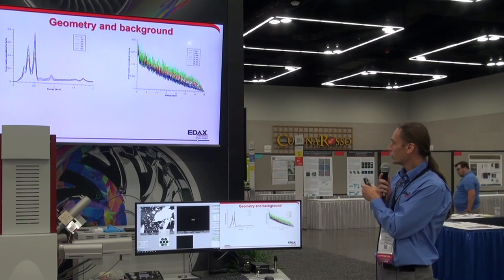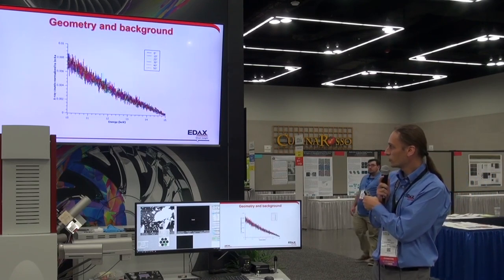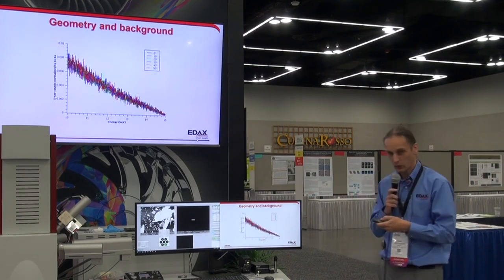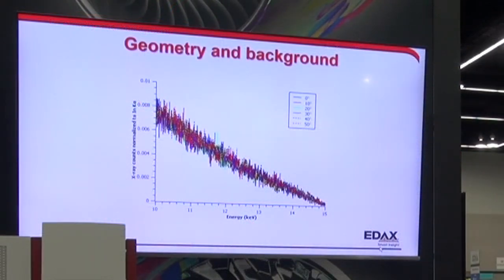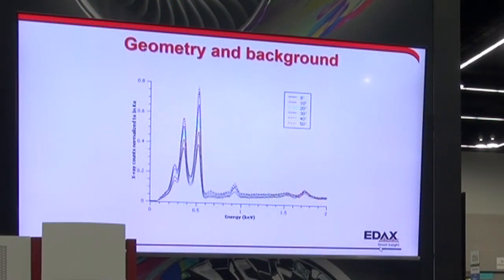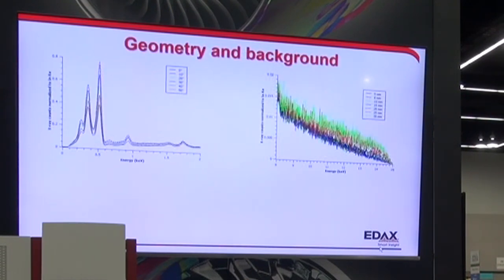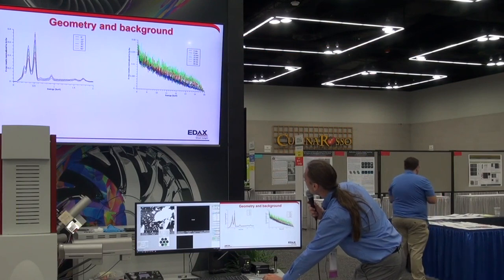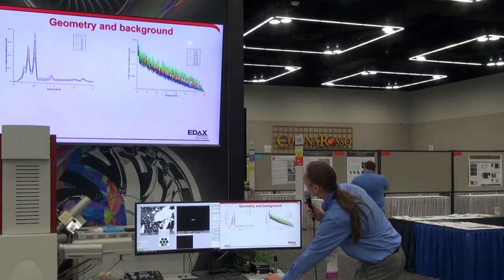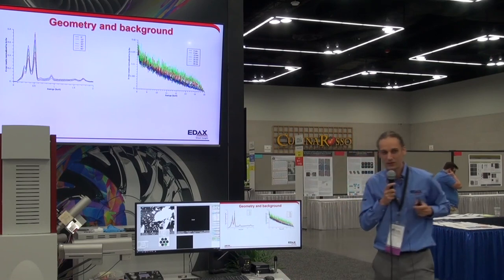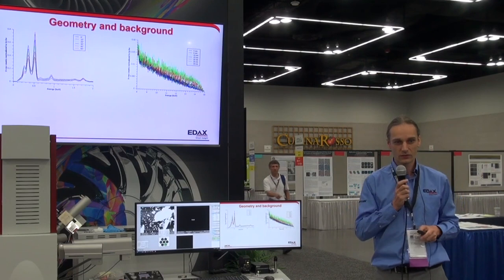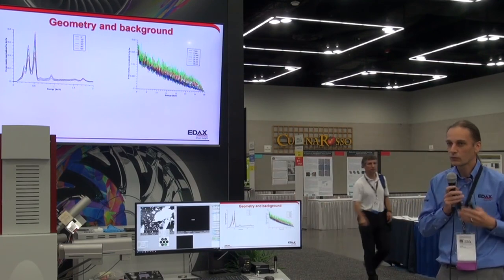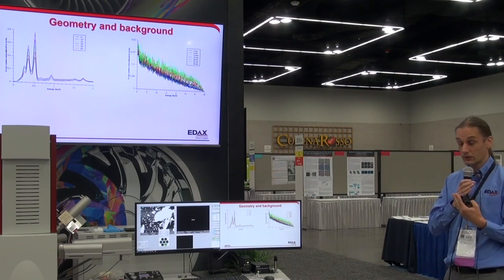One thing I want to point out: there is no change in the background tail when I tilt for the conductive sample — everything trails off towards 15 kilovolts. But at very long working distances, 25 and 30 millimeters, you can see a slight increase and a bump out in the high energy range. That's not x-rays — that's actually electrons getting into the detector. This is one of the reasons why we recommend staying close to the intersection distance of the detector.